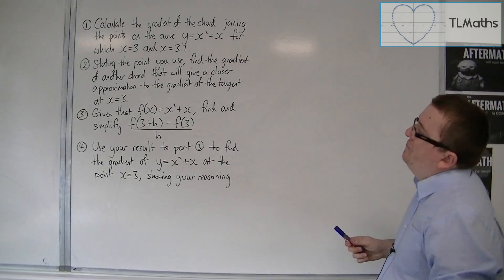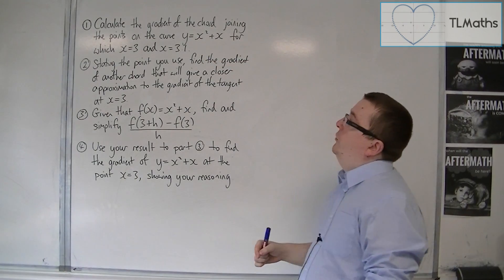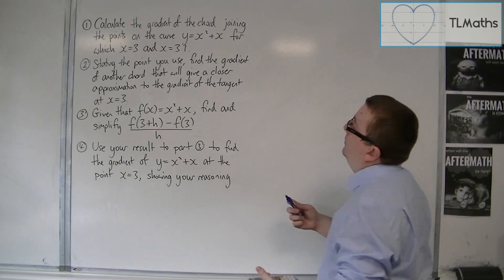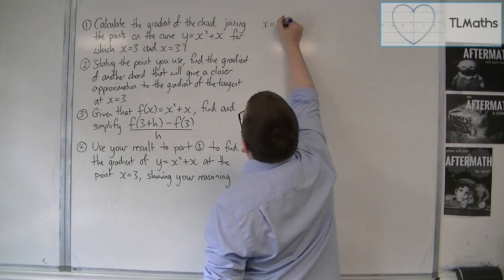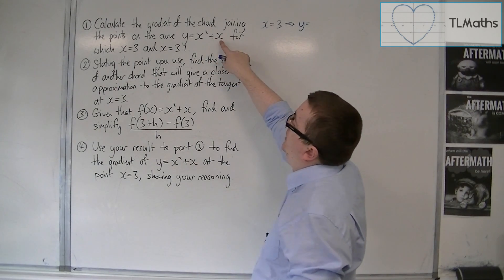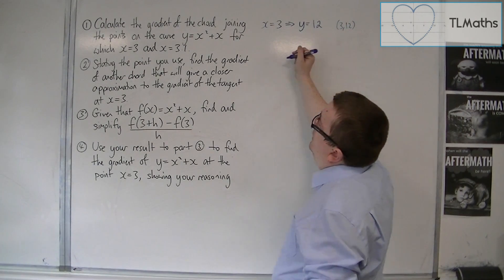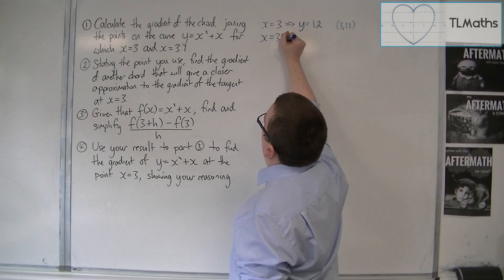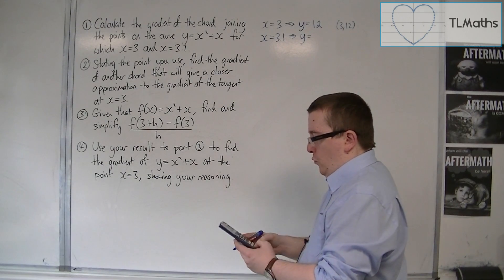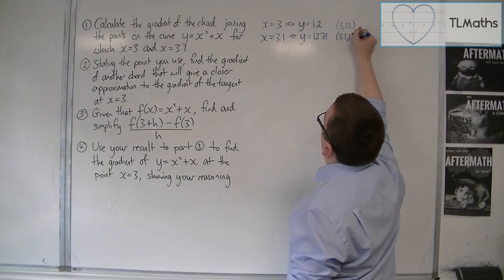So part 1: Calculate the gradient of the chord joining the points on the curve y equals x squared plus x, for which x equals 3 and x equals 3.1. So we need to find the y-coordinate for each of these x-coordinates. When x is 3, then y is equal to 3 squared plus 3, so 9 plus 3, which is 12. So that gives me one coordinate: 3, 12. Now the second x-coordinate is 3.1, so we need 3.1 squared plus 3.1, and that gets me 12.71. So I know the second point is 3.1, 12.71.